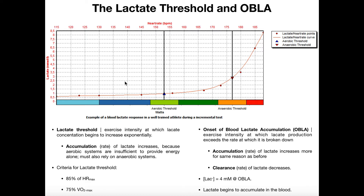If we look at the left side of the graph — which is actually most of the graph — as we increase exercise intensity, we really don't see much of an increase in lactate. Going from 115 beats per minute up to 145 or 150 beats per minute, there really isn't much of an increase in lactate; it's less than doubling. But at some point as we increase exercise intensity, we're going to hit something called the aerobic threshold. For this athlete in this sample data, the aerobic threshold appears to be somewhere around 153 beats per minute.